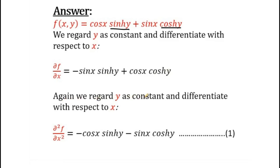Again, we regard y as constant — sinh(y) is constant and cosh(y) is constant — and differentiate with respect to x. So, the derivative of minus sin(x) is minus cos(x), and sinh(y) remains as it is. The derivative of cos(x) is minus sin(x), so we put minus sin(x) there and cosh(y) remains as it is. We name this equation as equation 1.